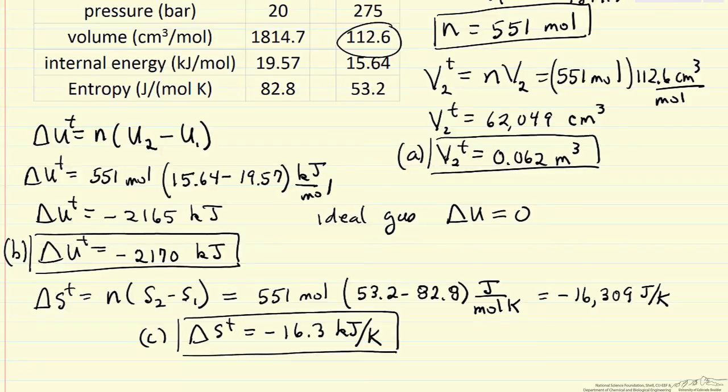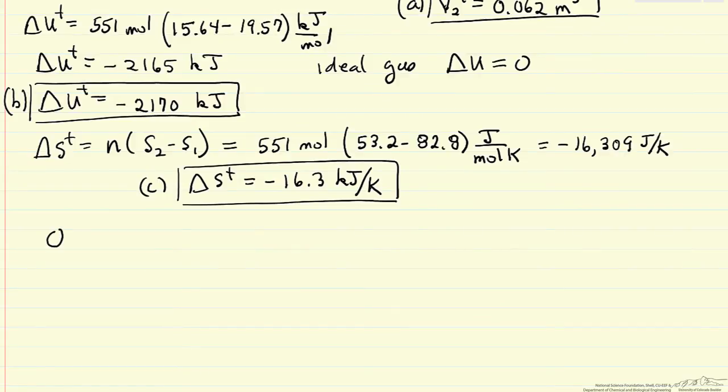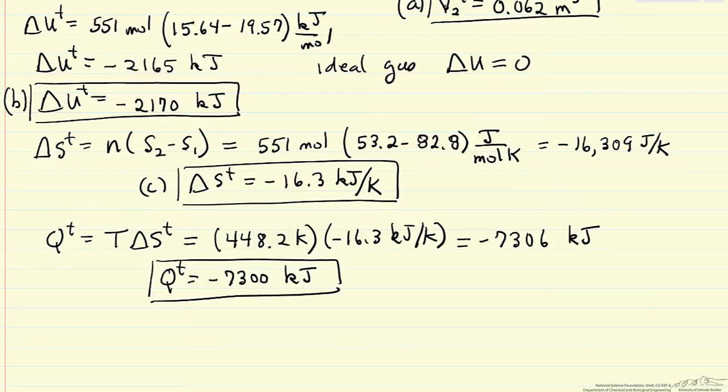Now the last two parts, we're going to have to make assumptions. It asks what the heat and work is, so to do that calculation, we'd have to assume it's done reversibly, otherwise we have no way of determining it. What we're calculating is the work reversible and heat transfer reversible. The heat transfer reversible is the temperature, since it's isothermal, times the total entropy change. The temperature has to be absolute temperature in Kelvin.